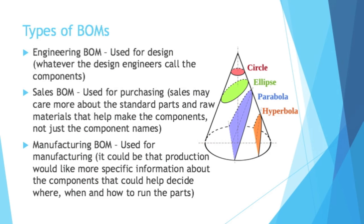There are different types of BOMs. An engineering Bill of Materials is used for design — the design engineers have specific names for the components and you're going to see that in their Bill of Materials. A sales BOM would be used for purchasing. Sales may care more about the standard part names or raw materials that help make the components — they might not care about what the components are eventually called.